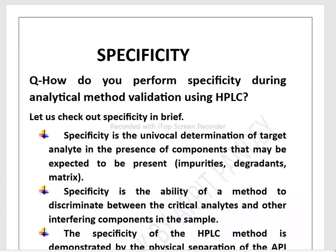The first question that arises in our mind is: how do you perform specificity during analytical method validation using HPLC? Let's check out specificity briefly. What is specificity and why is it performed during validation? Specificity is the unequivocal determination of a target analyte in the presence of components that may be expected to be present — that is, impurities, degradants, and matrix.